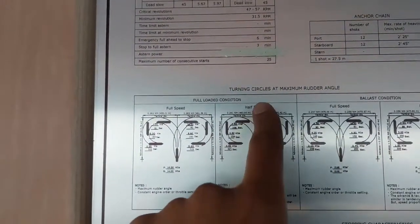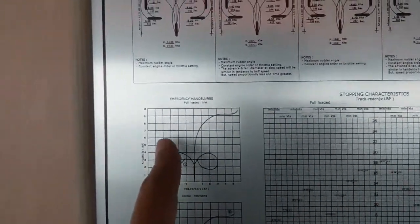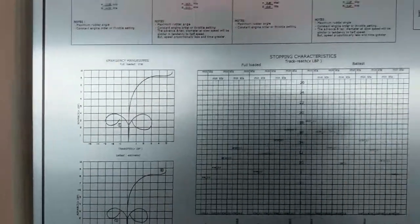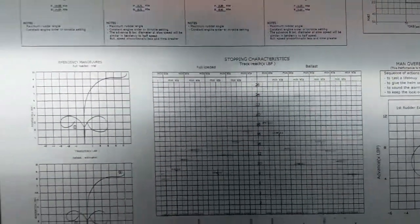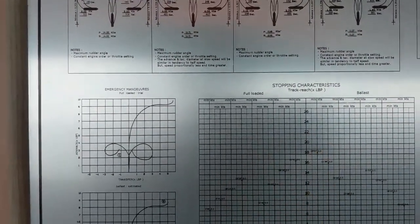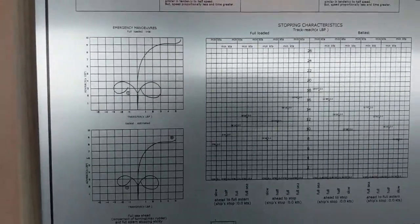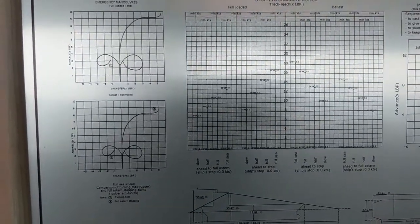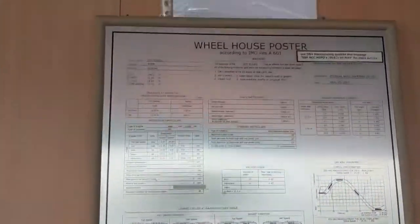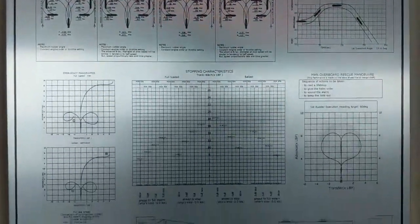The wheelhouse poster also includes turning circles at maximum rudder angle, stopping characteristics, emergency maneuvers, and man overboard rescue maneuvering. Of these, stopping characteristics is what everyone is most interested in — including pilots.